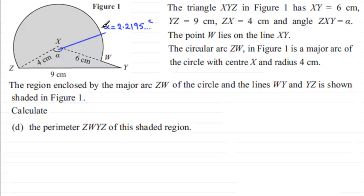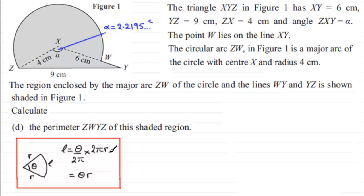And to get arc length you should be familiar with this idea when you're working in radians that if you've got a sector here and the arc length is L then it's a fraction of the circumference of the circle.